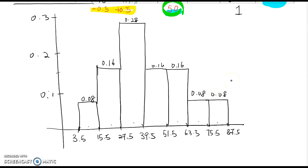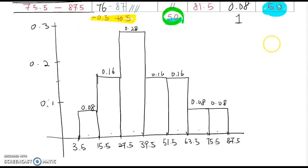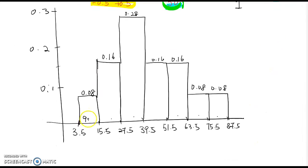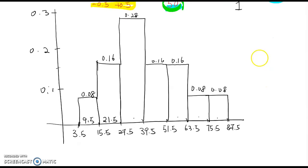Of course, we need to put the midpoint value, which is 9.5, 21.5, and then 33.5, and 45.5.